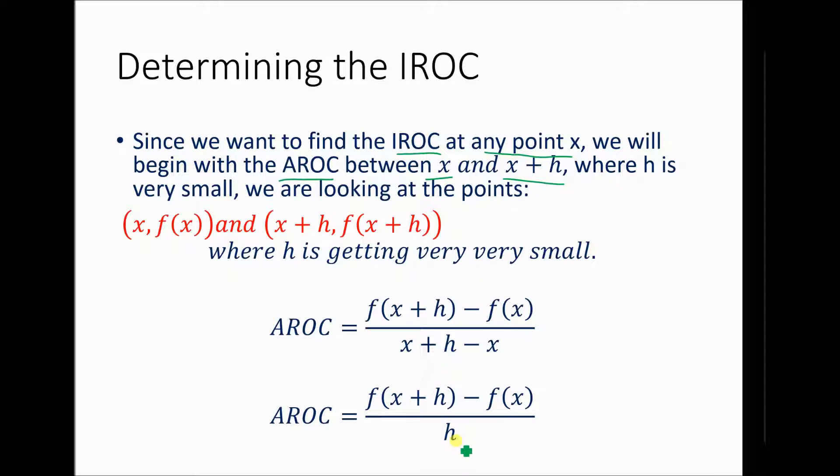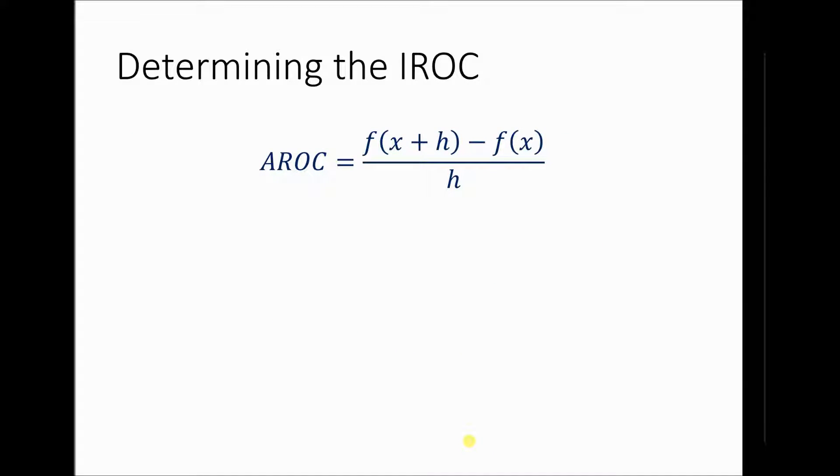Ideally, we want h to be getting smaller and smaller and smaller. So we're at this point. We've got that the average rate of change can be determined from this formula. That was what we were looking at yesterday. But we want h to be very, very small. In particular, we actually pretty much want it to go to zero.